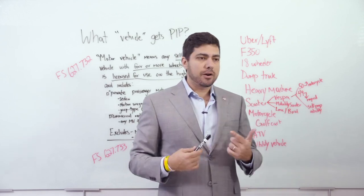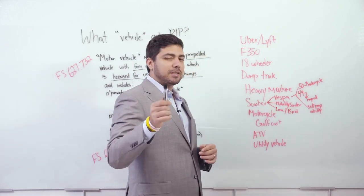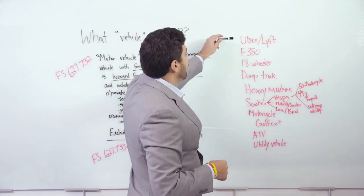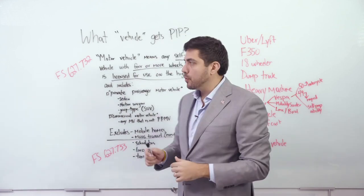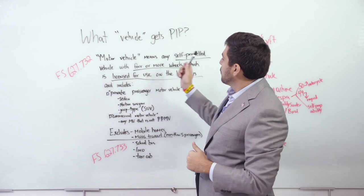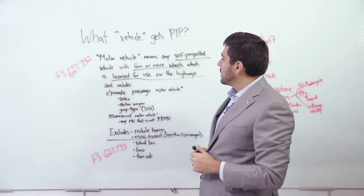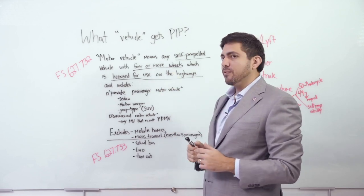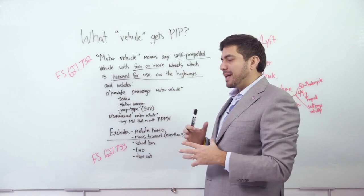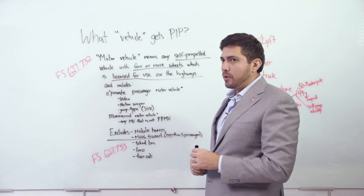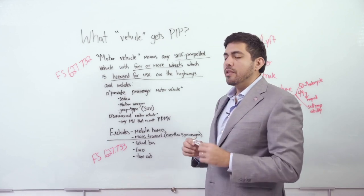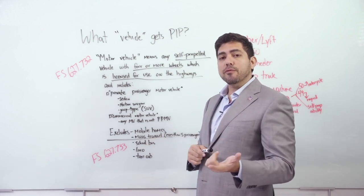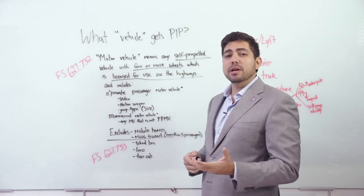Now they have two exclusions, mobile homes and mass transit. They define mass transit as more than five passengers. So think of like a bus. Not a van. A van is self-propelled four wheels licensed for use on the highway. This is more mass transit, like big buses, Greyhound buses, stuff like that. They exclude school buses, limousines and taxi cabs. They do not need PIP.